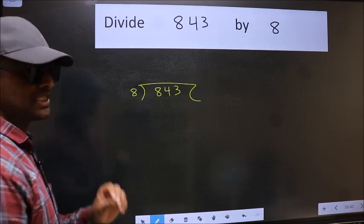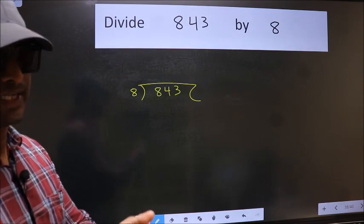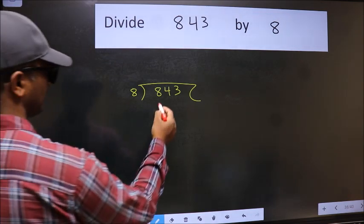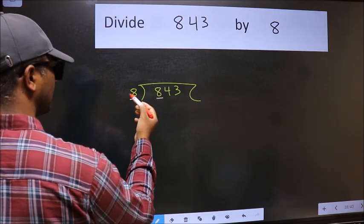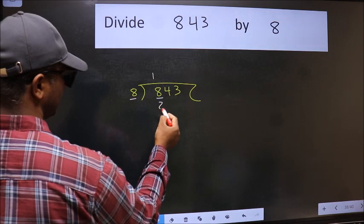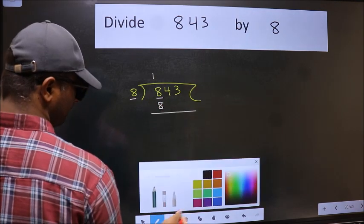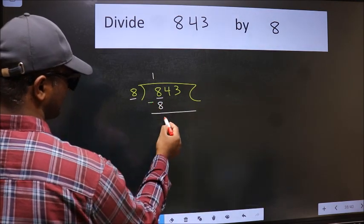This is your step 1. Next, here we have 8 and 8 here. When do we get 8 in the 8 table? 8 once 8. Now we should subtract. We get 0.